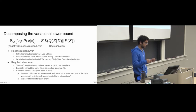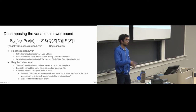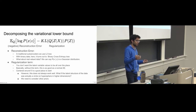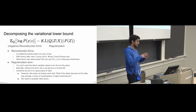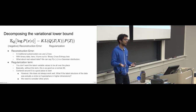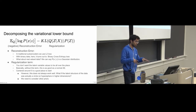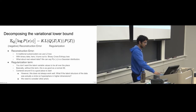The second term is the more important one people talk about in VAEs — the regularization term. You don't want the latent variable values to be all over the place. You have beliefs that your latent variable values should be distributed in a certain way. Without this term, this is essentially as good as a normal autoencoder. With the Gaussian prior, we're saying the latent space is centered around zero — that's generally a good place to start, but it doesn't always work well, and we'll come back to this.